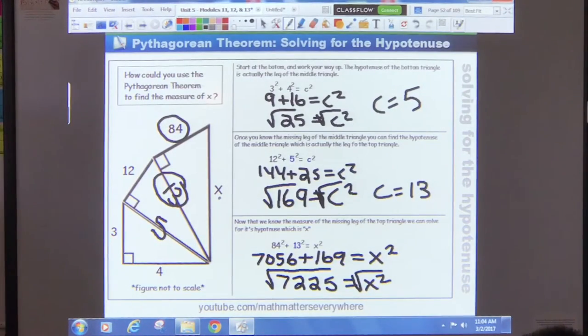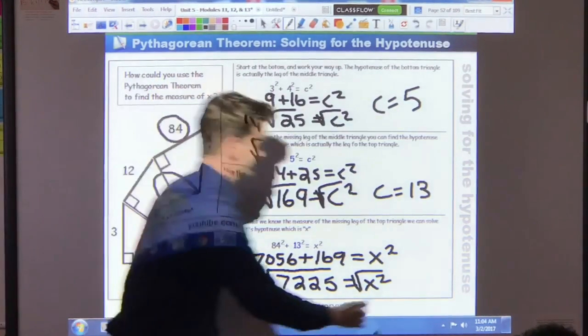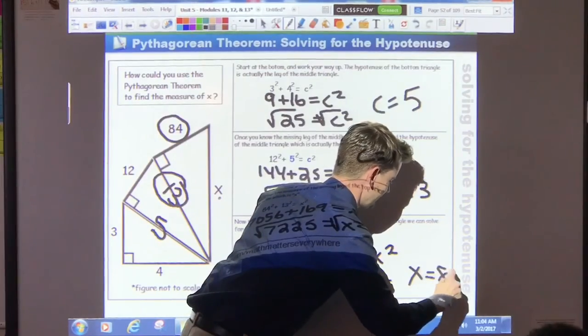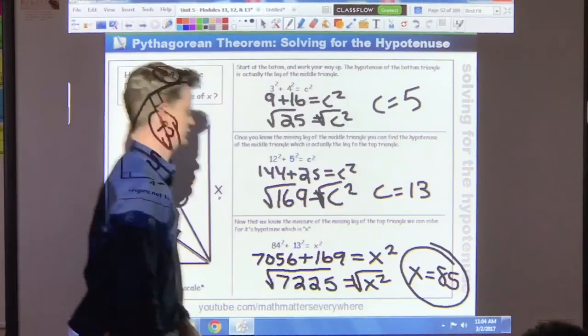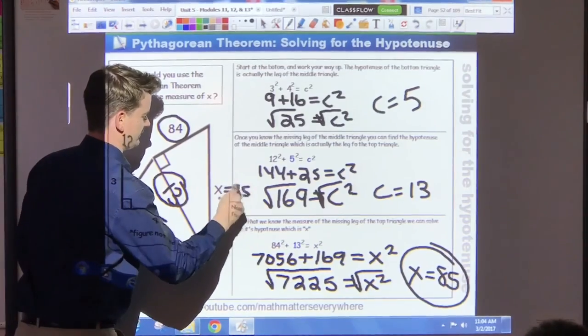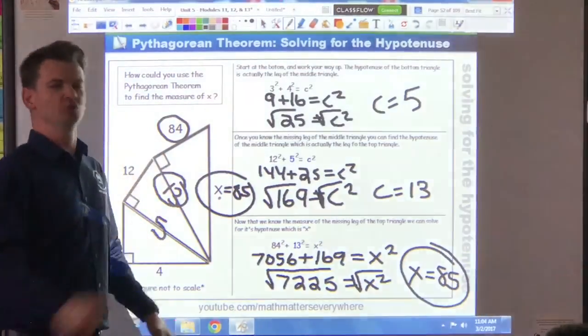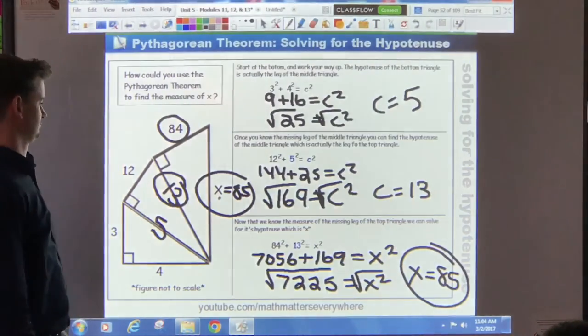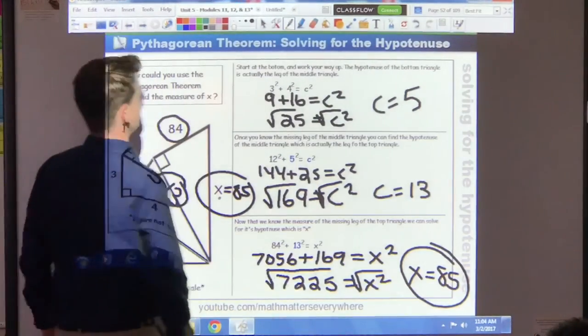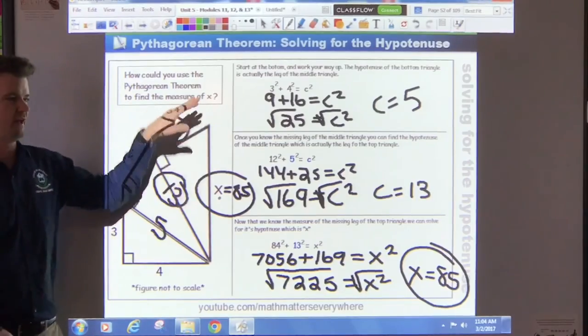7,225 is equal to X squared. I'm going to go out on a limb and say that this is a perfect square, because I know them all up to 100. So if you take the square root of that. 85. I was going to do it. But yeah, it's 85. Alright. Yeah, so X equals 85. Great job. X is equal to 85. Good job, team! Let's go! Chest bump. Questions on how we did this?